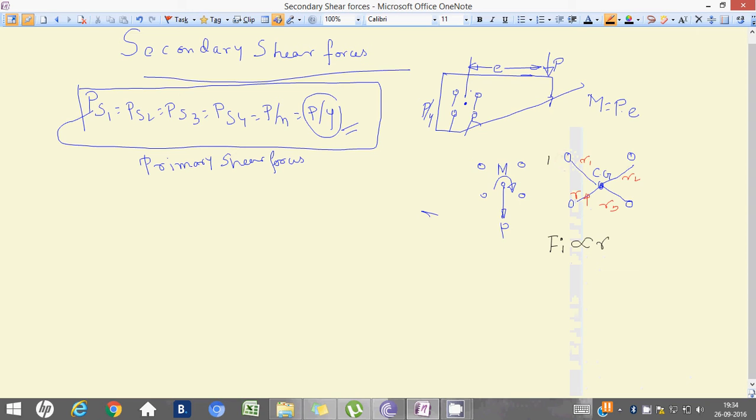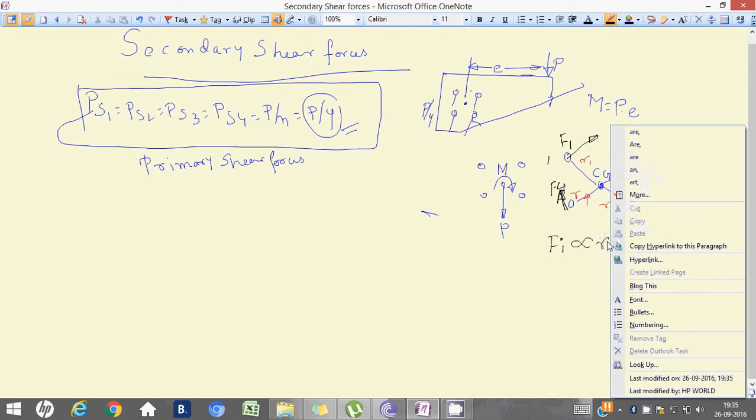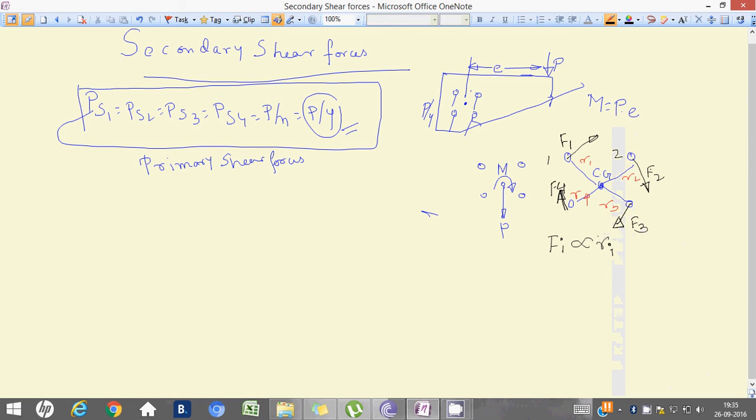So, if we draw a perpendicular vector for the first and then for the second, F2 for that one, F1 and in such manner, F3 and F4. So, in this case, this F1, where we are generalizing as Fi, is directly proportional to Ri, the assumption that we are talking about.